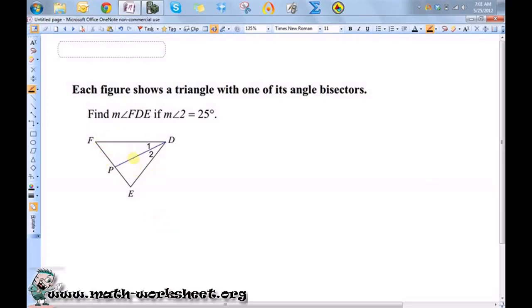This diagram shows a triangle with one of its angle bisectors. So that means that this line segment PD must be an angle bisector, or DP if you'd like to call it that.